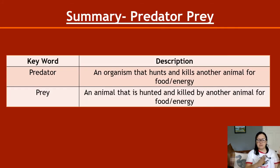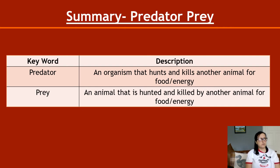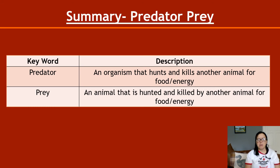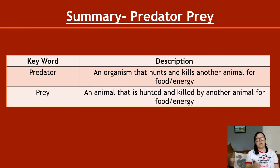To summarize: a predator is an organism that hunts and kills another animal for food/energy; prey is an animal that's hunted and killed by another animal for food/energy. That is it for the ecosystems key area. The next one is distribution of organisms — it's rather large. I've split it into six videos to minimize the amount of content at any one time, but there's quite a lot of knowledge in that one. Make sure your definitions for this unit are fairly solid before you move into distribution of organisms. See you then, bye.